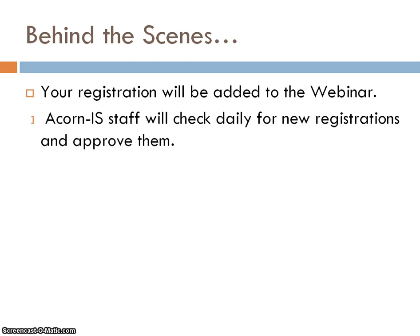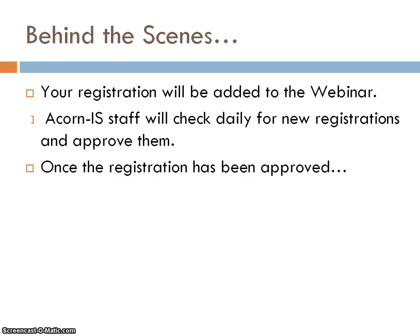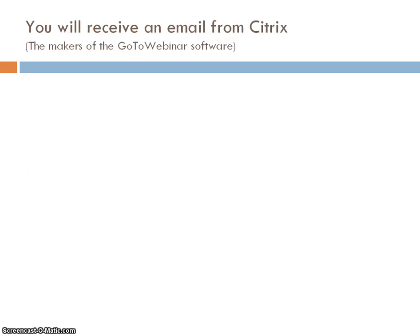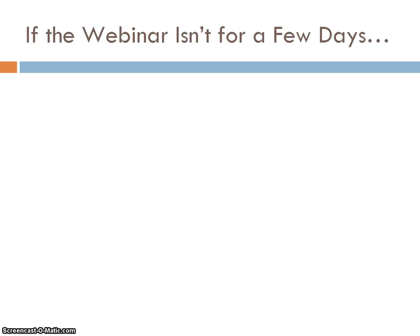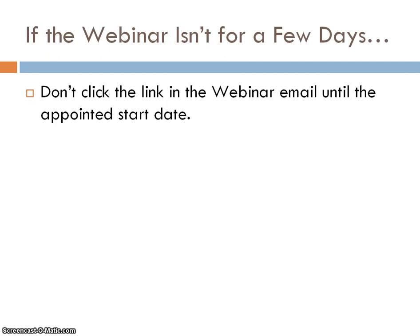Behind the scenes, your registration will be added to the webinar. Acorn staff will check daily for new registrations and approve them. Once the registration has been approved, you will receive an email from Citrix, the makers of the GoToWebinar software. This email will contain the date and time of your webinar, a link to join the webinar, and the phone number to call in to the webinar. If the webinar isn't for a few days, don't click the link in the webinar email until the appointed start date.